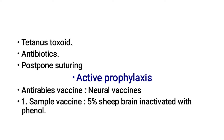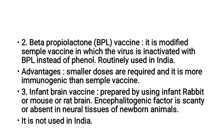Active prophylaxis involves anti-rabies vaccines. Neural vaccines include the Semple vaccine made from infected brain inactivated with phenol, and the BPL vaccine — modified Semple vaccine — in which the virus is inactivated with beta-propiolactone. The BPL vaccine is routinely used in India. Advantages of BPL vaccine: small doses are required and it is more immunogenic than the Semple vaccine. The infant brain vaccine is prepared using infant rabbit or mouse brain; the encephalitogenic factor is reduced or absent in neural tissues of newborn animals.